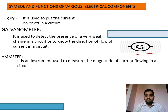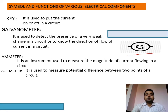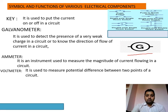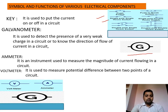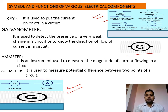The ammeter is used to measure the magnitude of current flowing through a circuit. The voltmeter is used to know the potential difference between any two points in a circuit. Looking at their symbols: the voltmeter, ammeter, and galvanometer each have distinct symbols, along with different types of switches used in a circuit.